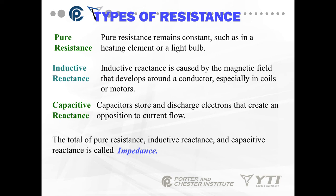This especially comes into play with alternating current circuits, which we'll talk about shortly. Inductive reactance is the magnetic field that builds up around wires, especially in coils or motors. Pure resistance is constant, like in a heating element or a light bulb. Capacitive reactance is built up in capacitors, causing an opposition to current flow. Add it all together and you get the total resistance of a circuit, which is called impedance.